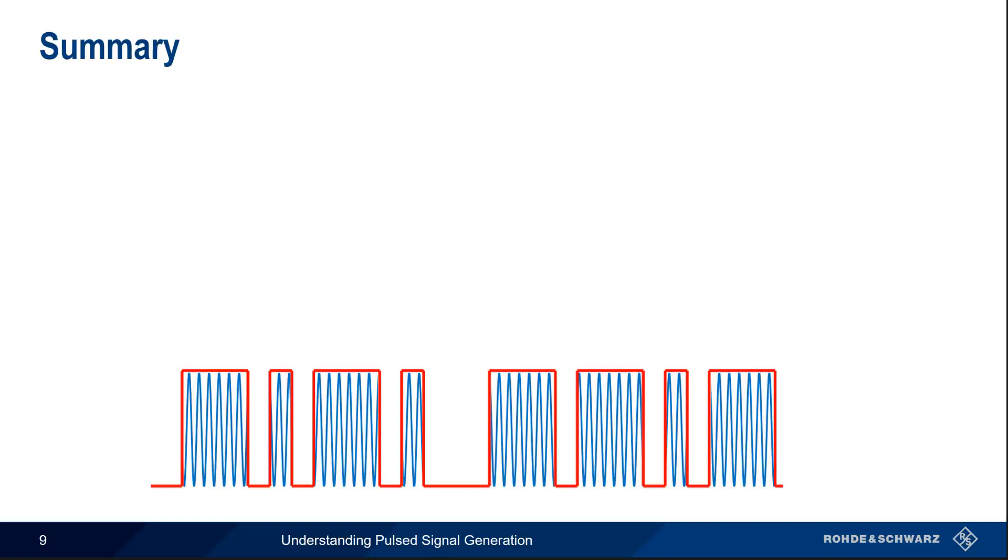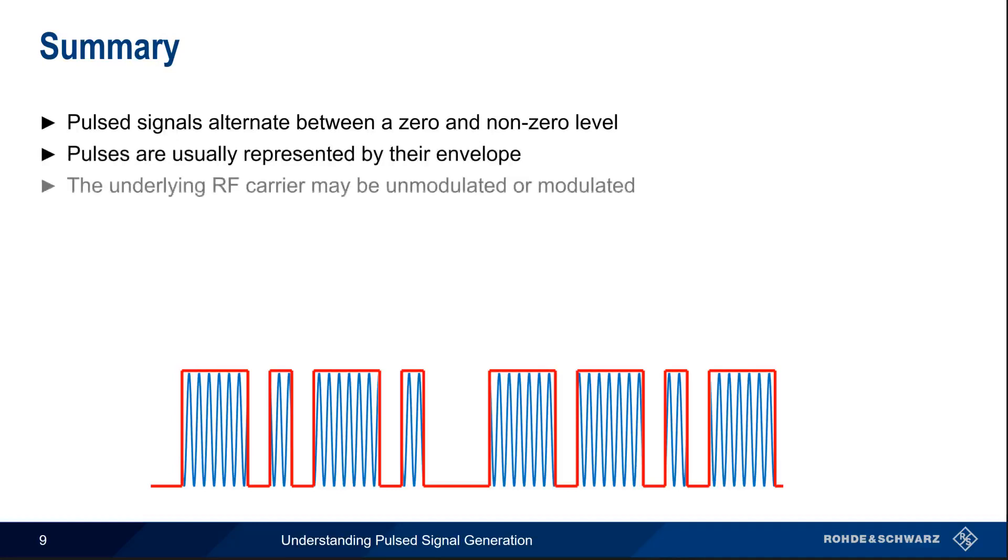So in summary, we define pulses as signals that alternate between a zero and a non-zero level, usually on a repeating basis. Although pulses are bursts of radio frequency energy, we typically represent pulses by their amplitude envelope. Recall that the underlying RF carrier may be modulated or unmodulated. Pulse modulation is commonly found in radar systems in order to obtain the benefits of shorter pulses using longer duration pulses.